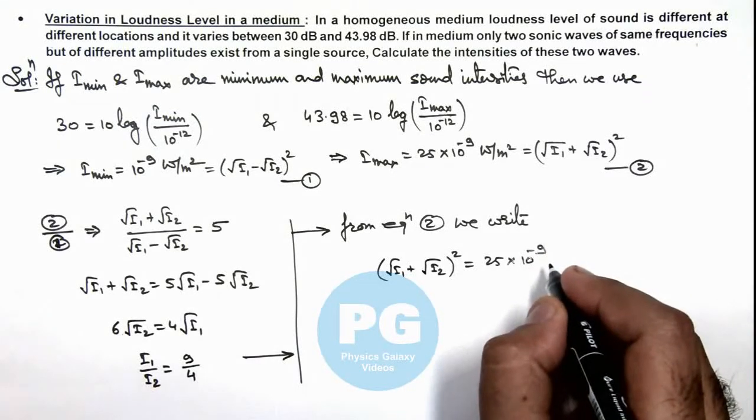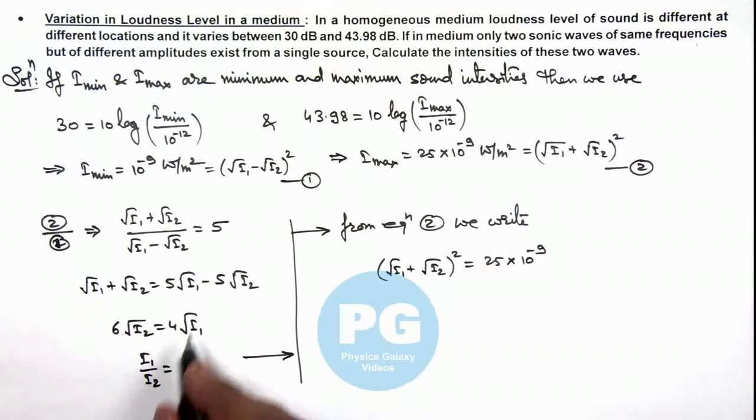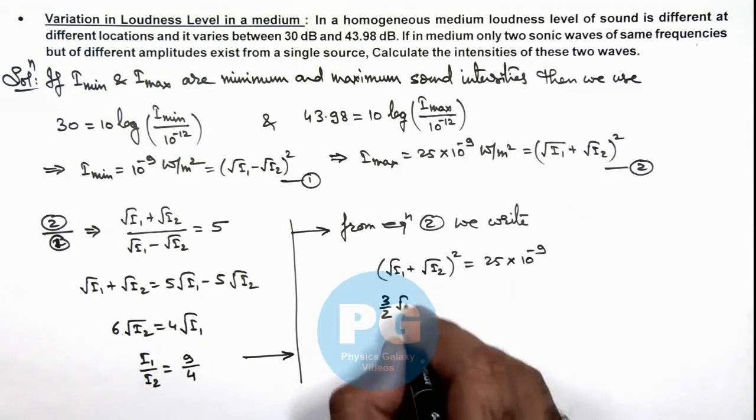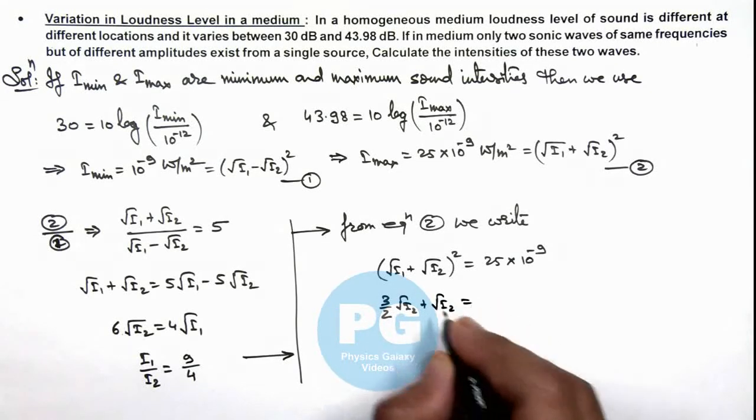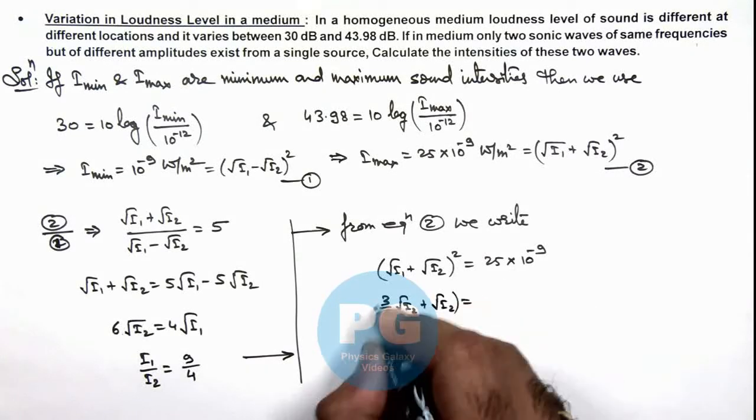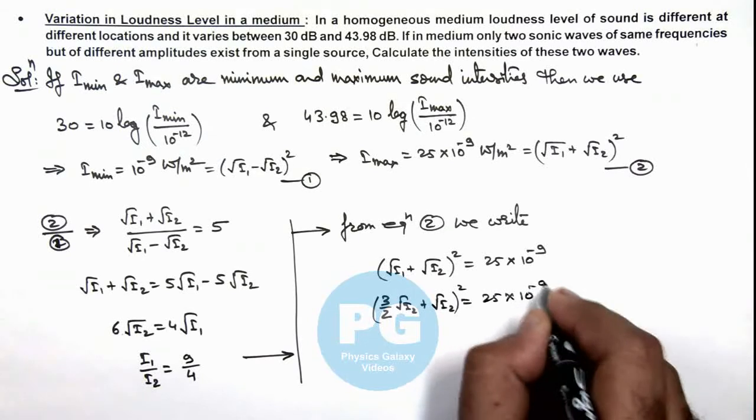In this situation we can substitute the value of root I_1 which is equal to 3 by 2 times root I_2. So this is 3 by 2 times root I_2 plus root I_2, whole square is equal to 25 into 10 to power minus 9.